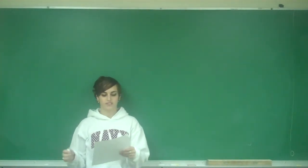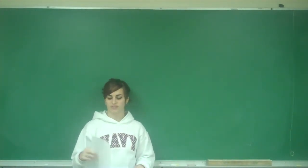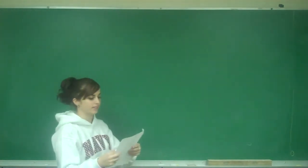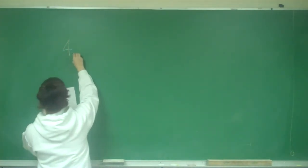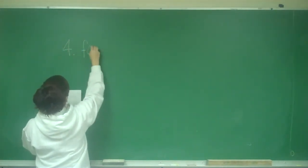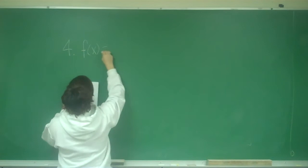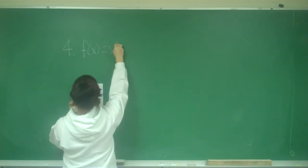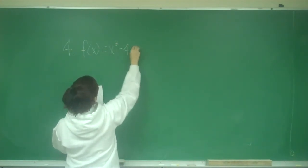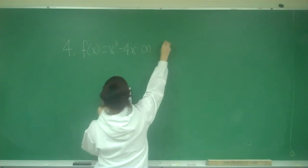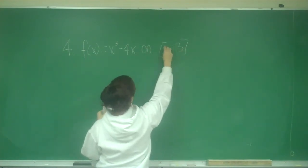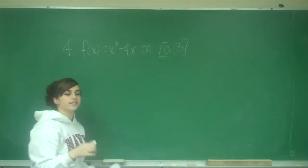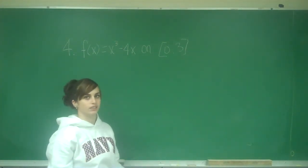Problem number 4 says to find all values of C guaranteed by the Mean Value Theorem for f of x equals x cubed minus 4x on 0 to 3. We have f of x equals x cubed minus 4x on the interval 0 to 3, and they want to find all the values of C guaranteed by the Mean Value Theorem.